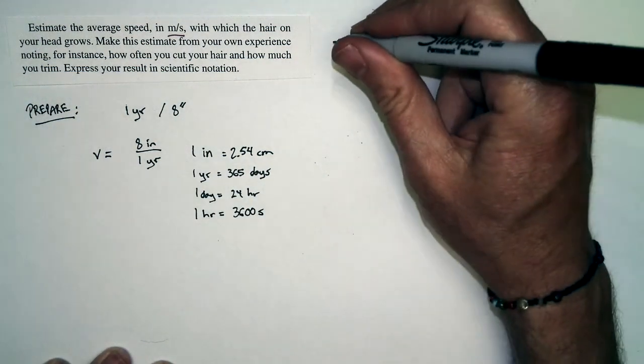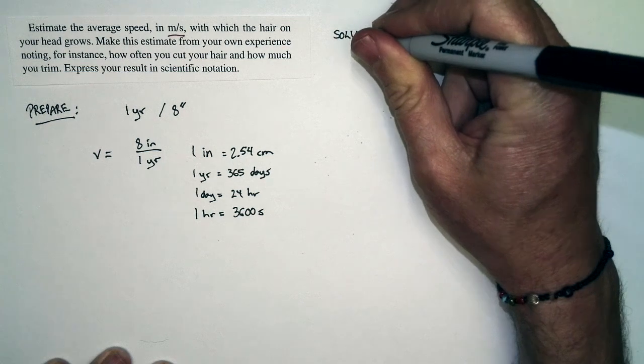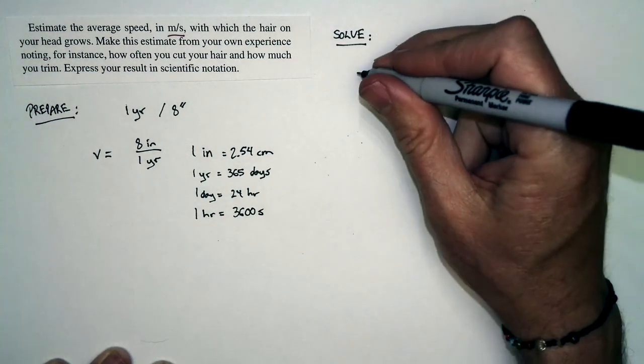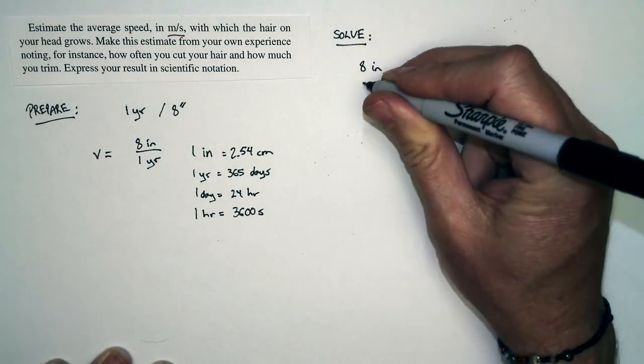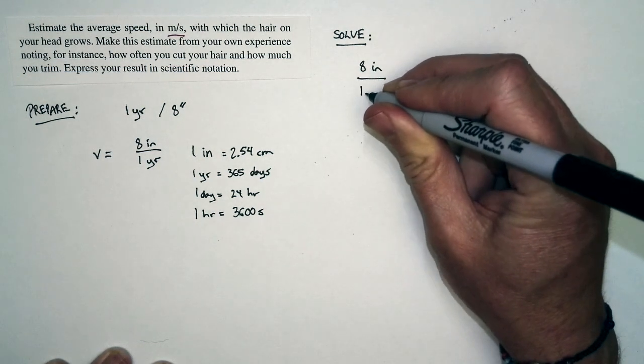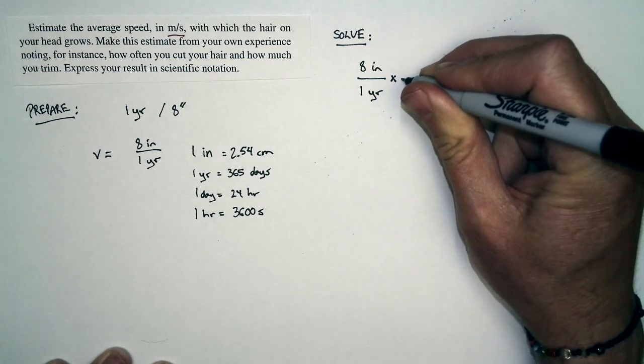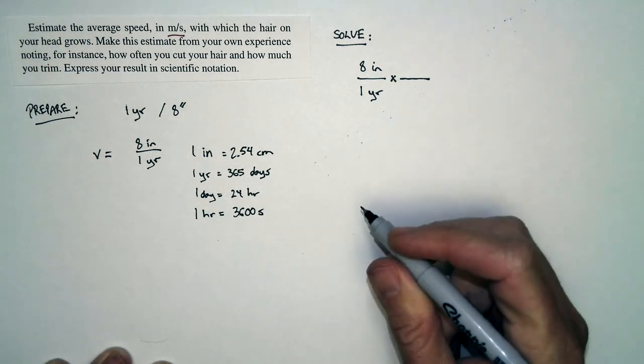That's going to be our solution. Now let's go ahead and do this. We're going to start with the number that we wrote down previously, eight inches in one year, and then we multiply by successive factors, which are factors of one.